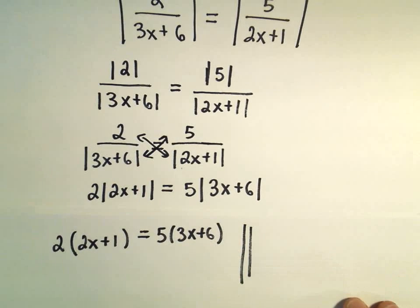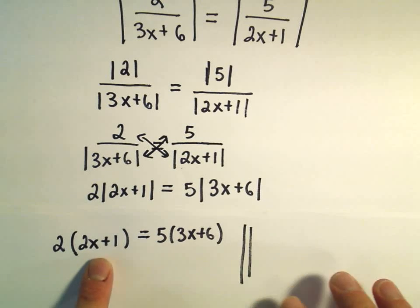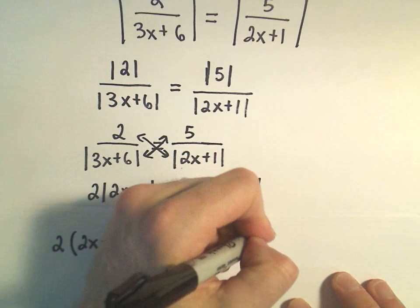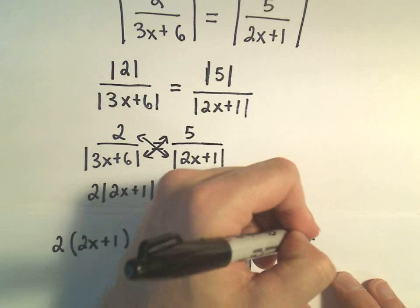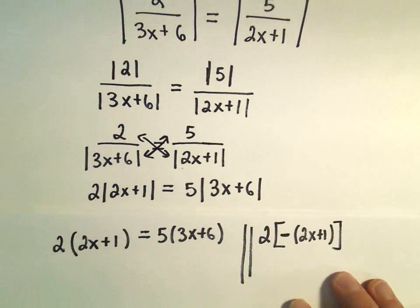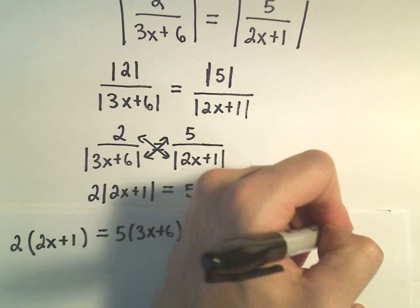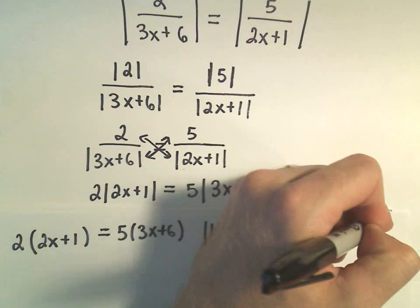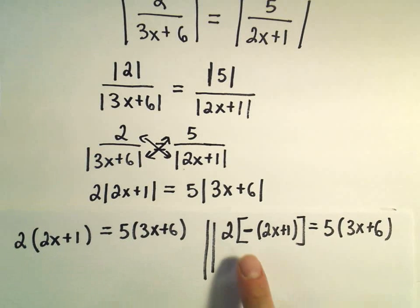The other equation we'll have to solve is we do the same thing, but on one of the set of parentheses we have to multiply it by a negative as well. So instead of just in parentheses 2x plus 1, I'm going to put the negative on that side. And then the right side I'm simply going to write as 5 and in parentheses 3x plus 6. So we've introduced this negative 1 on one set of the parentheses.